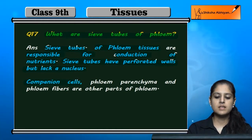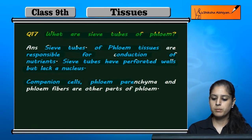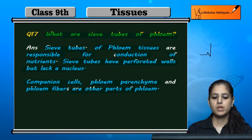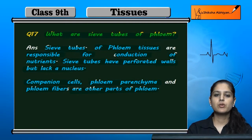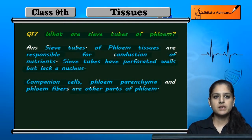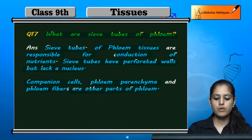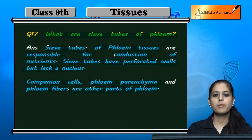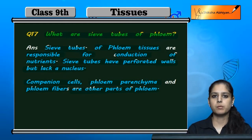Companion cells, phloem parenchyma, and phloem fiber are the other parts of phloem. These are additional components of phloem tissue.